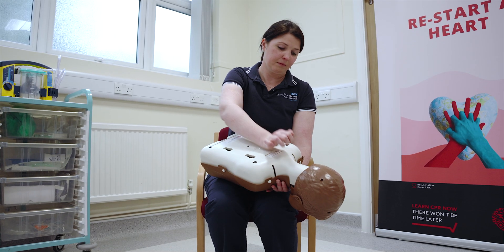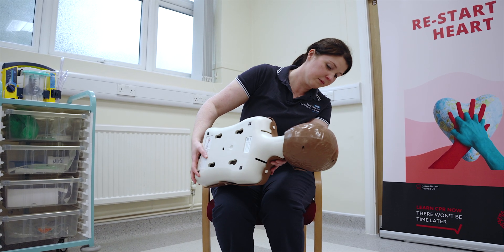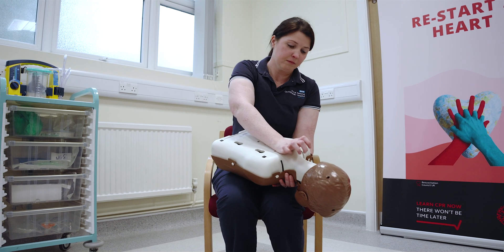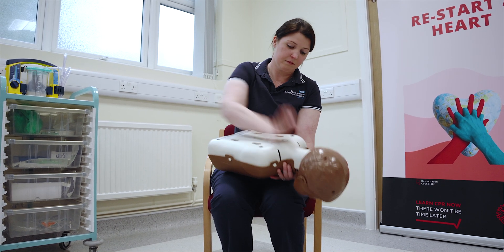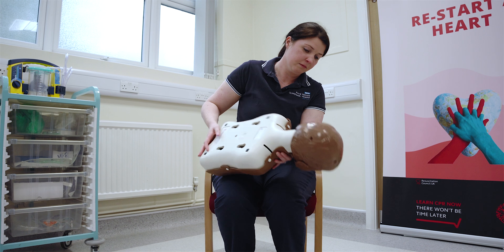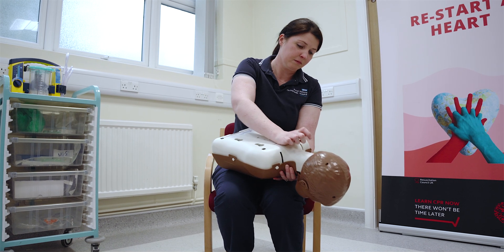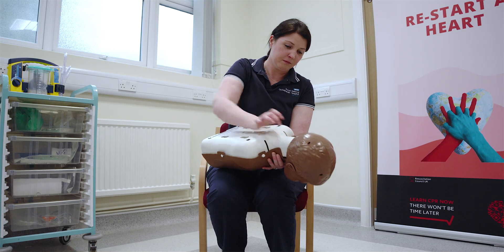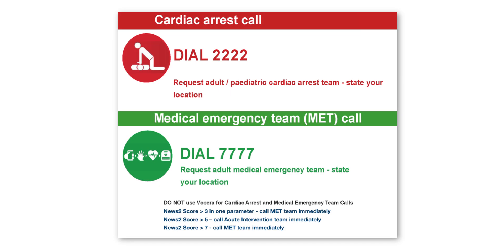After five abdominal thrusts, reassess and go back to back blows. If the patient at any point goes unconscious, open the airway and try rescue breaths, then move on to paediatric basic life support.